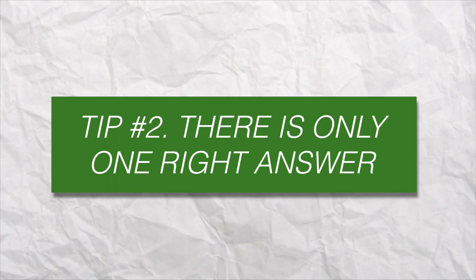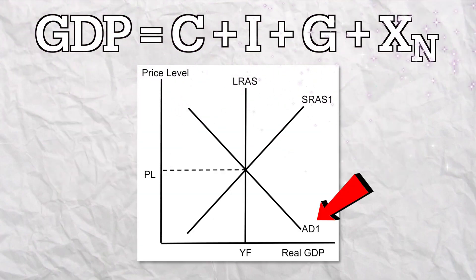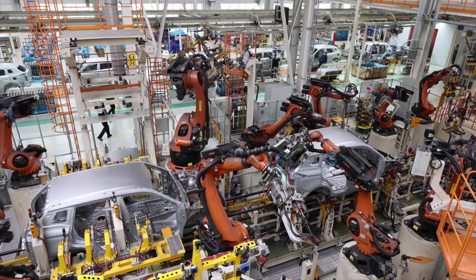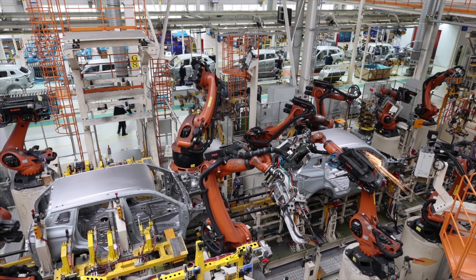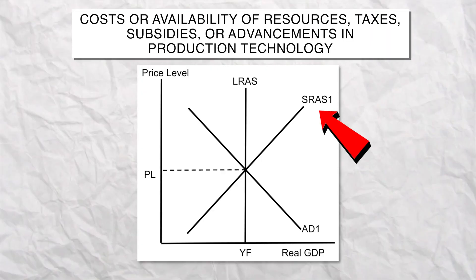Tip number two: there's only one right answer. Aggregate demand is going to shift when there's a change in spending by consumers, businesses, the government, or foreigners. Aggregate supply shifts when there's anything that changes production — so the costs or availability of resources, taxes, subsidies, or advancements in production technology. That seems easy and obvious, so let's practice.